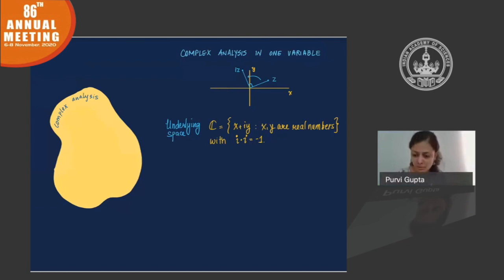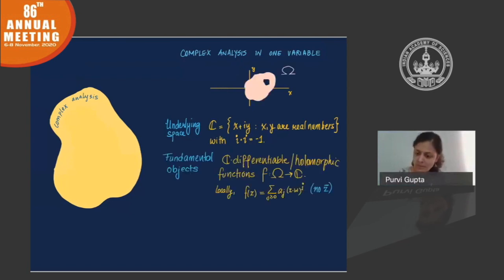This brings me to the fundamental objects that we study, which are complex differentiable or holomorphic functions, which are defined on certain regions of the complex space. A good way to think about these are that these are always locally representable as convergent power series in the complex variable z. We don't allow any z conjugate terms.